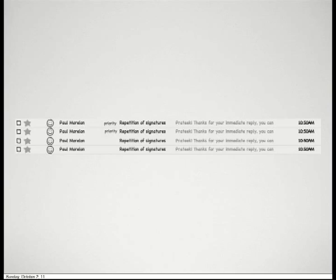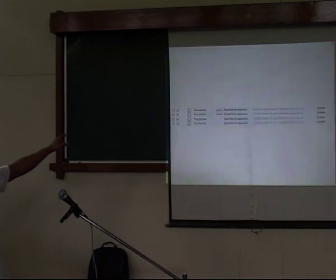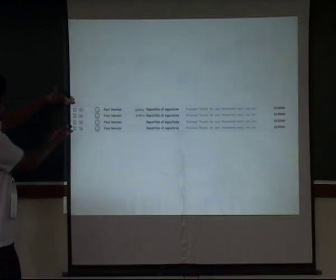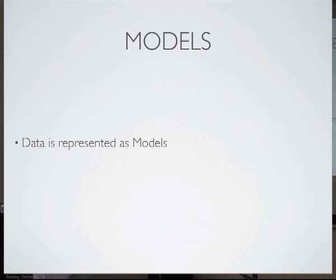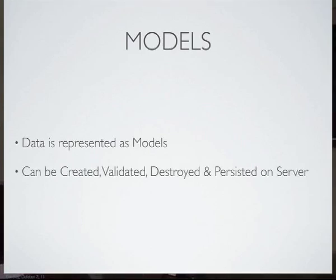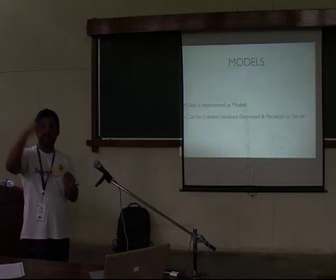We'll go through a little bit of code to build something like Gmail's interface — in our case, a ticket listing. You have a ticket listing element with individual ticket rows. Data is represented as models. If you have an email, the email object with its subject and content is a model. You can create models, validate them, destroy them, and persist them on the server. You can fetch a model, make changes, and when you save it, it makes a call to the server and saves it back. It maps really well to your server's RESTful paradigm.